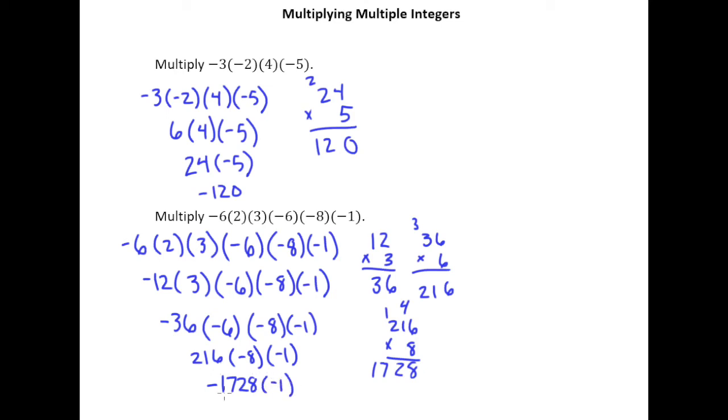And then finally, a negative times a negative is positive, so I get 1728 as my answer.